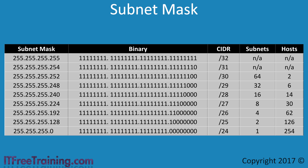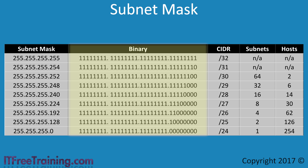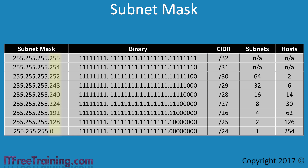Here are some examples of subnet masks. Subnet masks always have 1's on the left-hand side and 0's on the right-hand side. Because of this, certain decimals will always be used. Notice the number of subnets and hosts that are available depending on which subnet mask is used. As the number of 1 bits in the subnet mask decreases, more hosts are available per subnet; however, fewer subnets are available. Notice also that in the top 2 subnets, there are no subnets or hosts available.